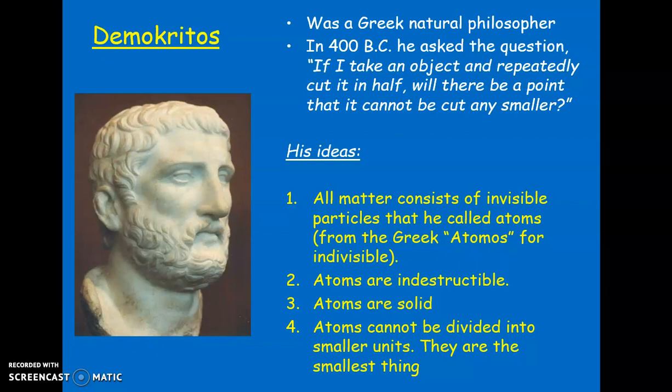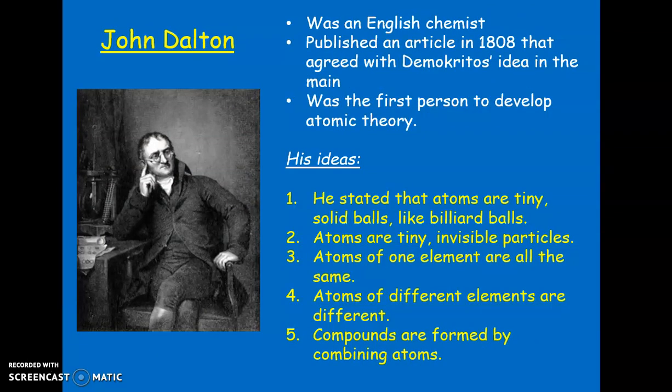In 1808, John Dalton revisited Democritus' idea. He was an English chemist, and he agreed that atoms were solid. But his idea was the first to come up with atomic theory. He stated that atoms are like snooker balls — tiny, invisible, and indivisible, meaning you can't go any smaller than them. He said atoms of one element are all the same, but atoms of different elements will be different. And he thought of the idea of compounds being formed by combining atoms.